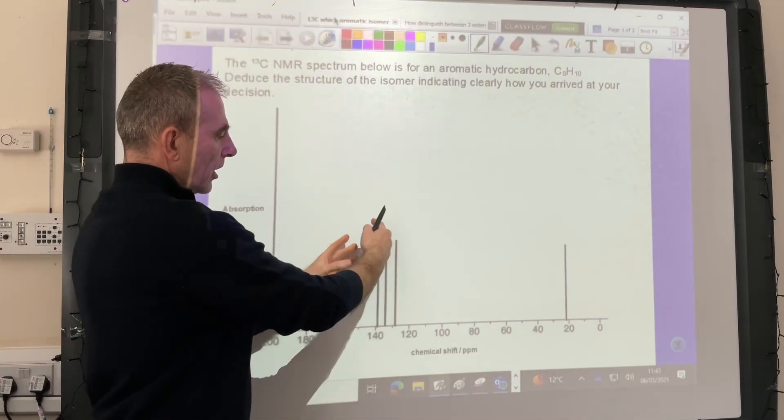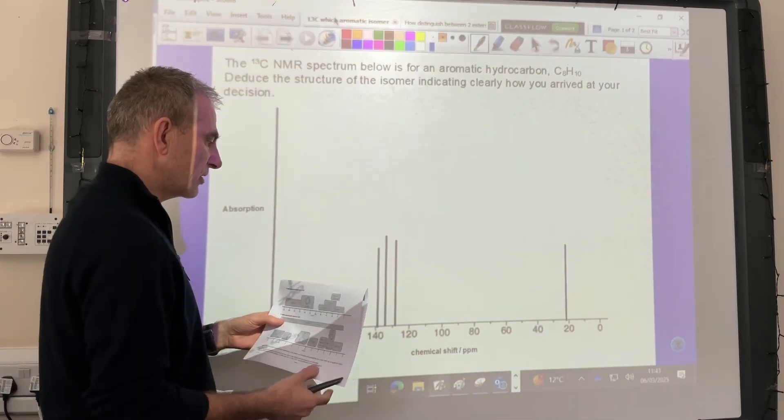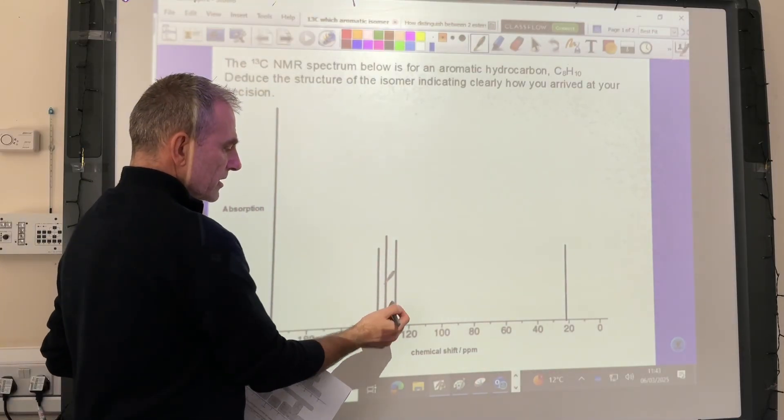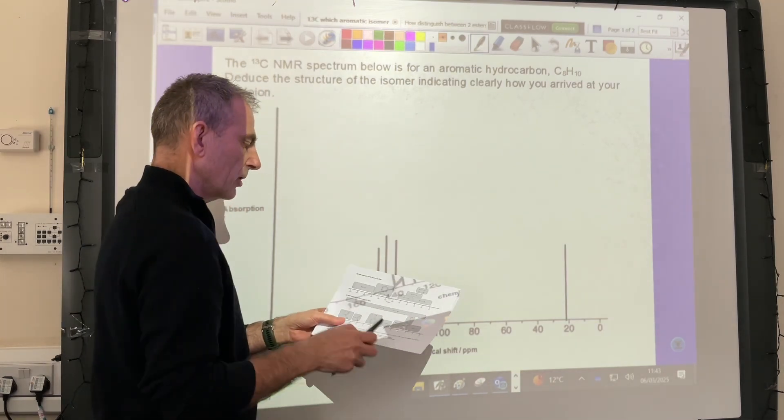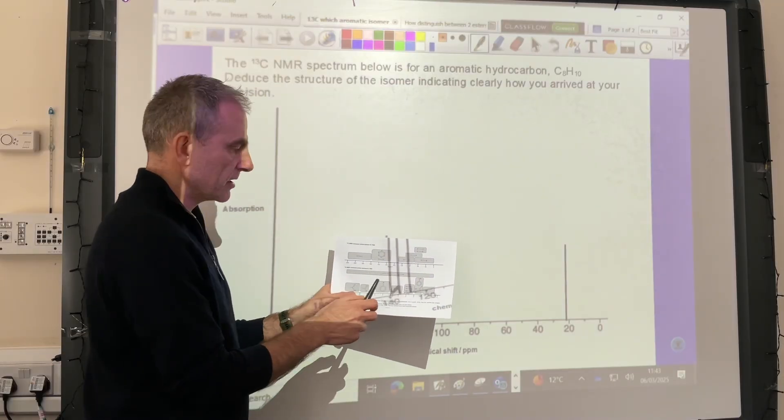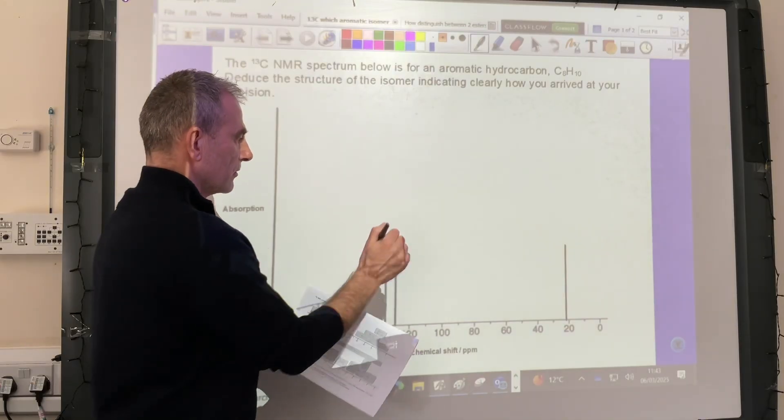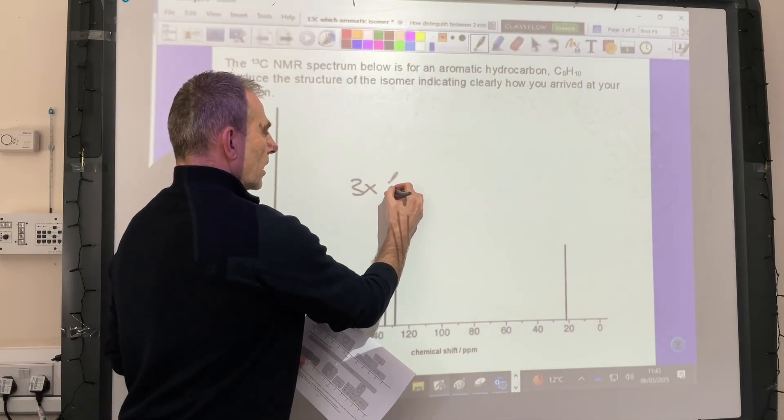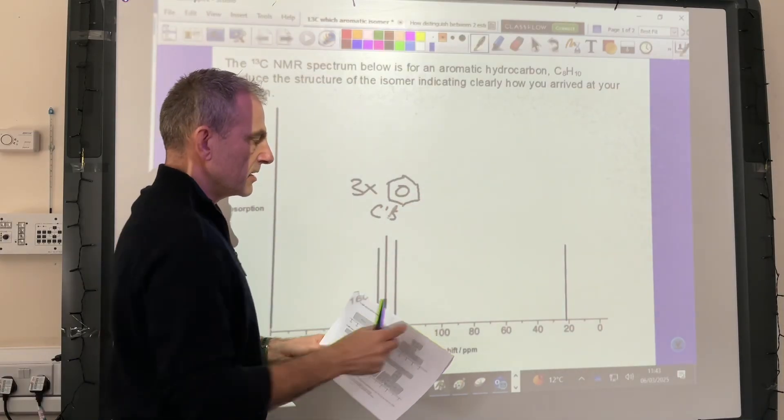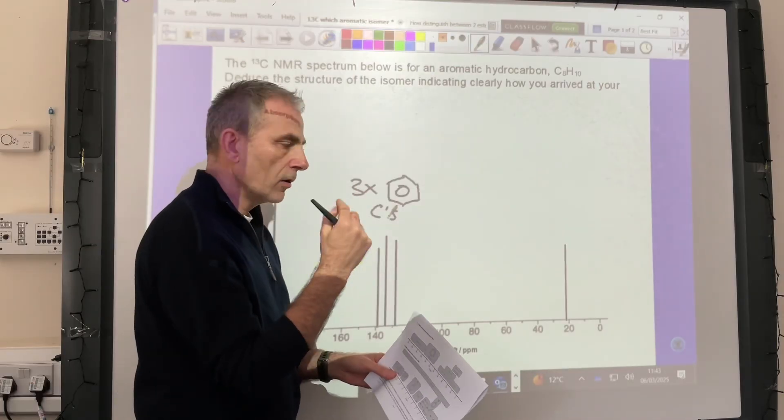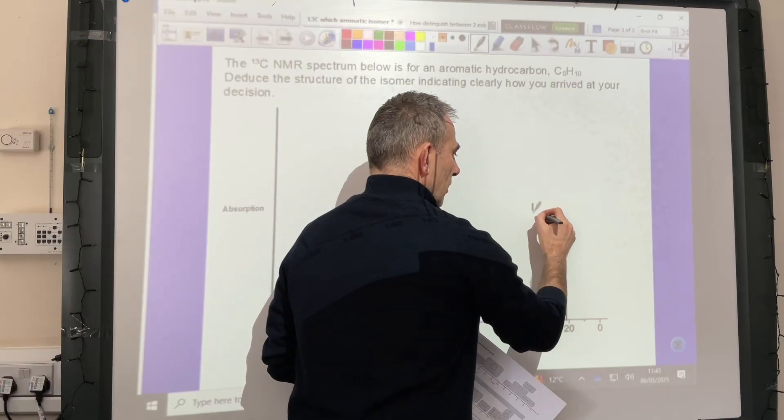Where should we start? Well, the first thing we'll do is identify what kind of carbon environments we've got in the molecule. Looking at our data sheet, we've got this cluster of three signals at around 130 to 140, which corresponds to aromatic carbons - benzene carbons. So we've got three benzene carbon environments, and this signal here is due to one environment in the C-C single bond region - one times C-C.